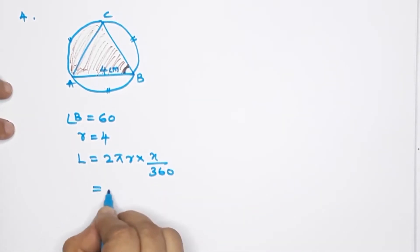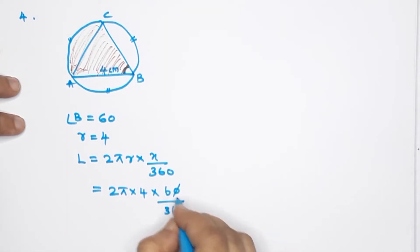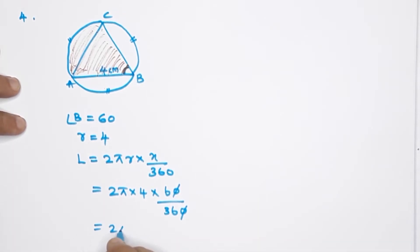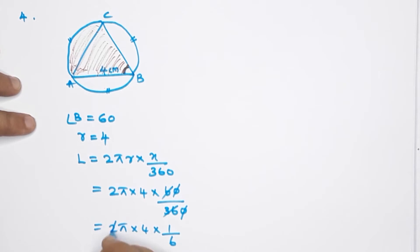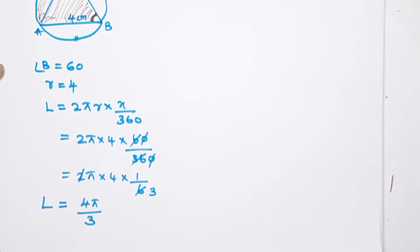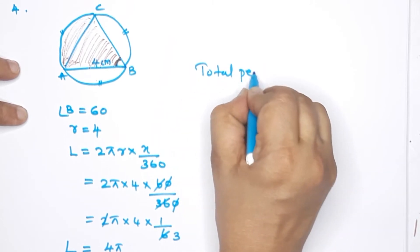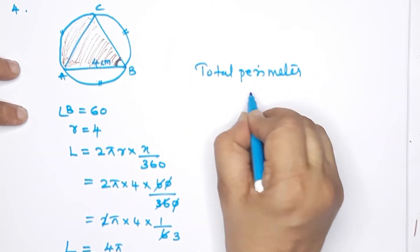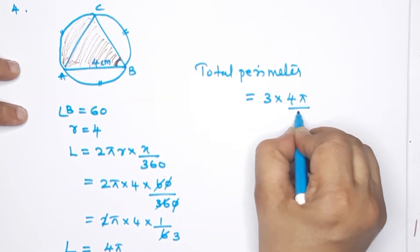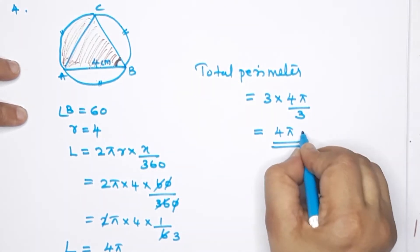The arc length formula is 2πr × (x/360). So that is 2π × 4 × (60/360). This gives 2π × 4 × (1/6) = 4π/3. Total perimeter is equal to 3 × (4π/3), which gives 4π. So this is 4π cm — that is the perimeter.